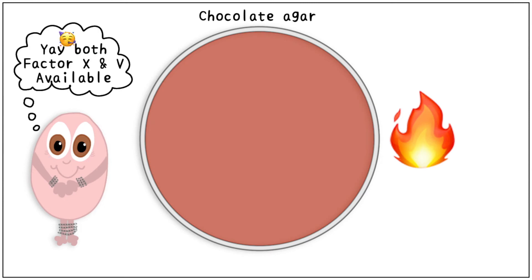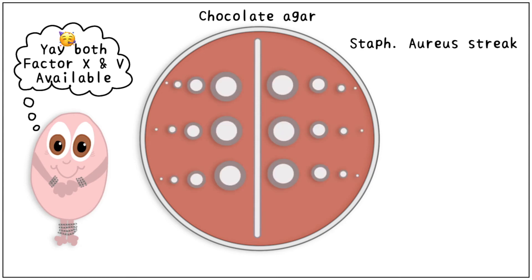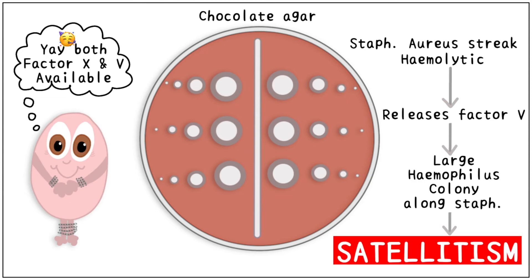Haemophilus is very happy now because both factor 5 and 10 are available. To enhance the growth even more, we make a streak of a haemolytic bacteria, one which destroys the RBCs such as Staphylococcus aureus, across the dish. This releases higher concentration of factor 5. The Haemophilus colonies thrive and grow much larger near this streak while those away from it are much smaller. This phenomenon is called satellitism, meaning they grow close to the Staphylococcus aureus streak just like the Earth and the Moon.